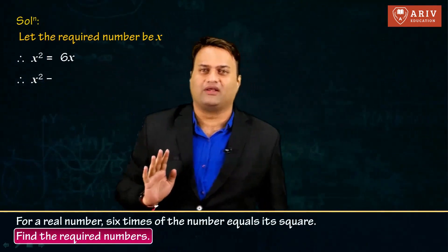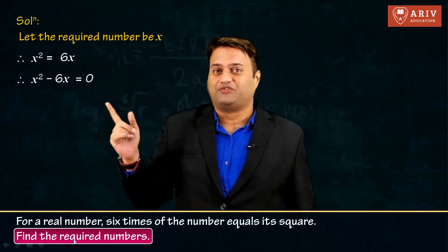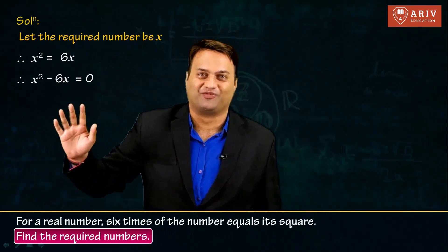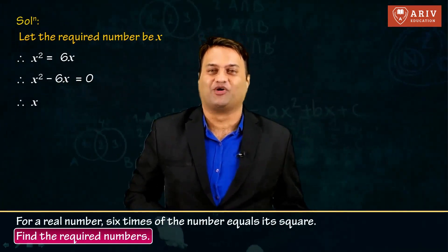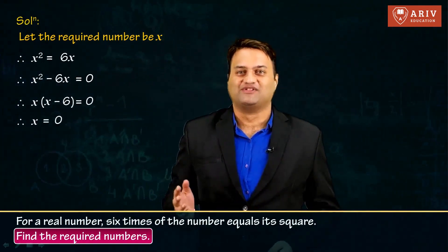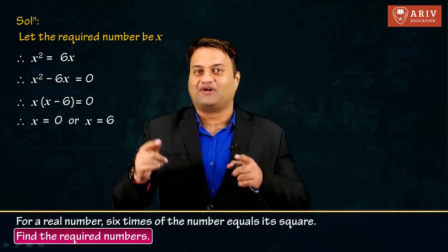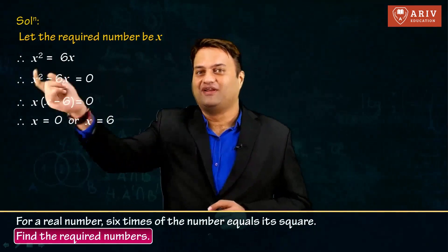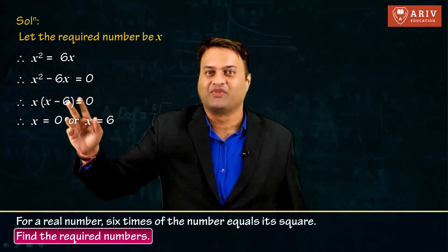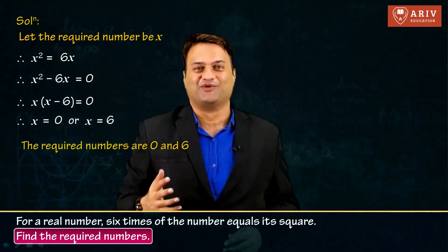Write it in the form of a quadratic equation: x square minus six x is equal to zero. We take x as common: x bracket x minus six is equal to zero. You get x is equal to zero, or x minus six is equal to zero, so x is equal to six. Whenever the equation has a square term and an x term, one of the roots will always be equal to zero. So the required numbers are zero and six.